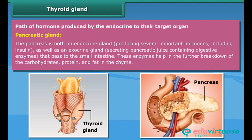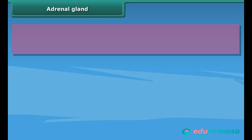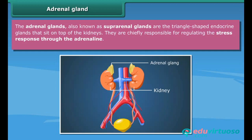These enzymes help in the further breakdown of carbohydrates, protein, and fat in the chyme. The adrenal glands, also known as suprarenal glands, are the triangle-shaped endocrine glands that sit on top of the kidneys. They are chiefly responsible for regulating the stress response through the adrenaline hormone.